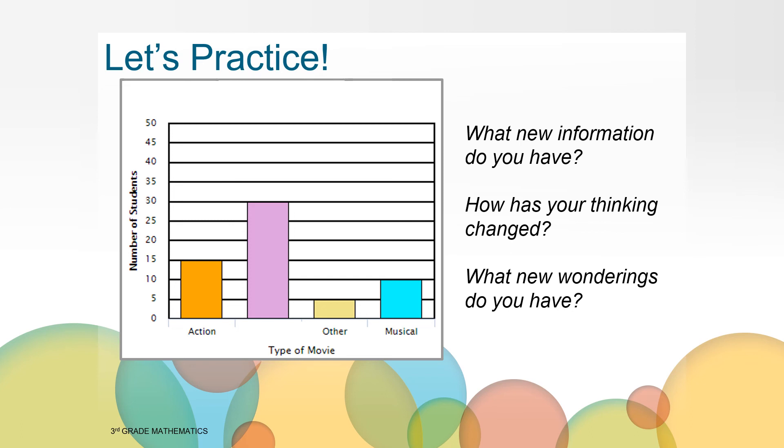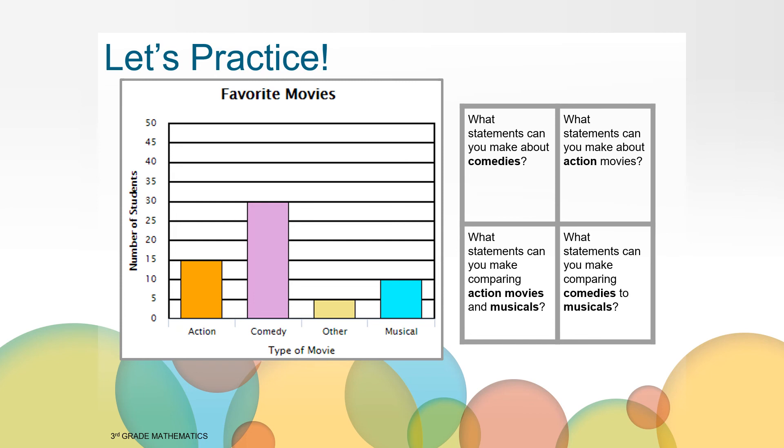It looks like there are a lot of students that picked that category. Also, are you wondering what the title of this graph might be? What might be the question this data is answering? Here are the final missing pieces to this graph. Were your predictions right about the final category? Now we know that last category of movie is comedy. We can also see now that the graph is about favorite movies by reading the title of the graph.